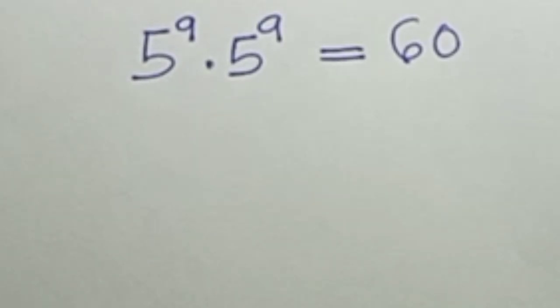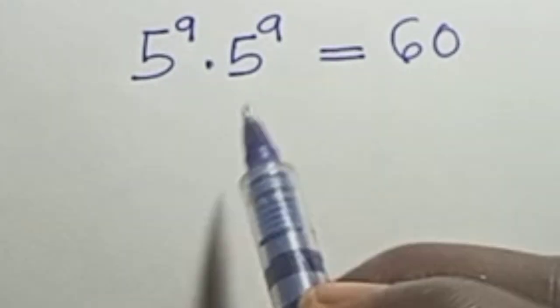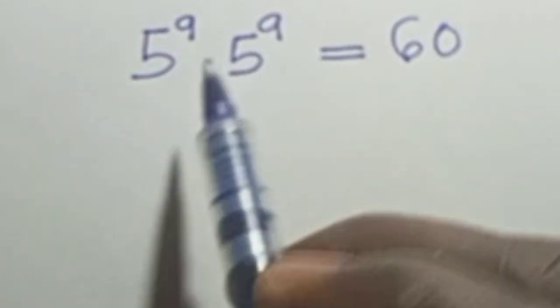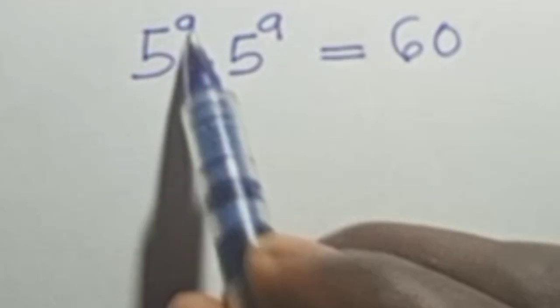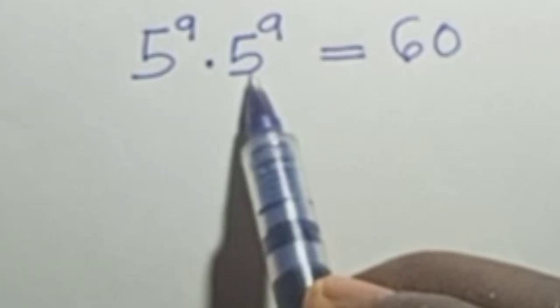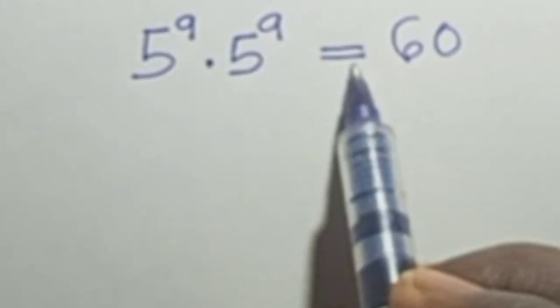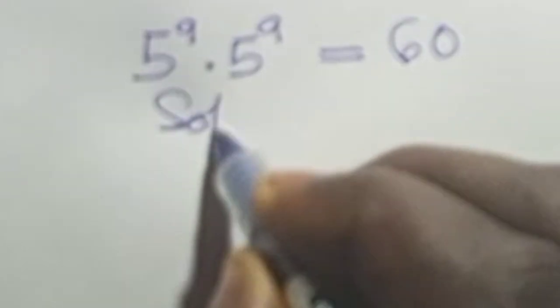Hello everyone. Let's solve this together. It says 5 raised to power a times 5 raised to power a equals 60. So if we say solution...